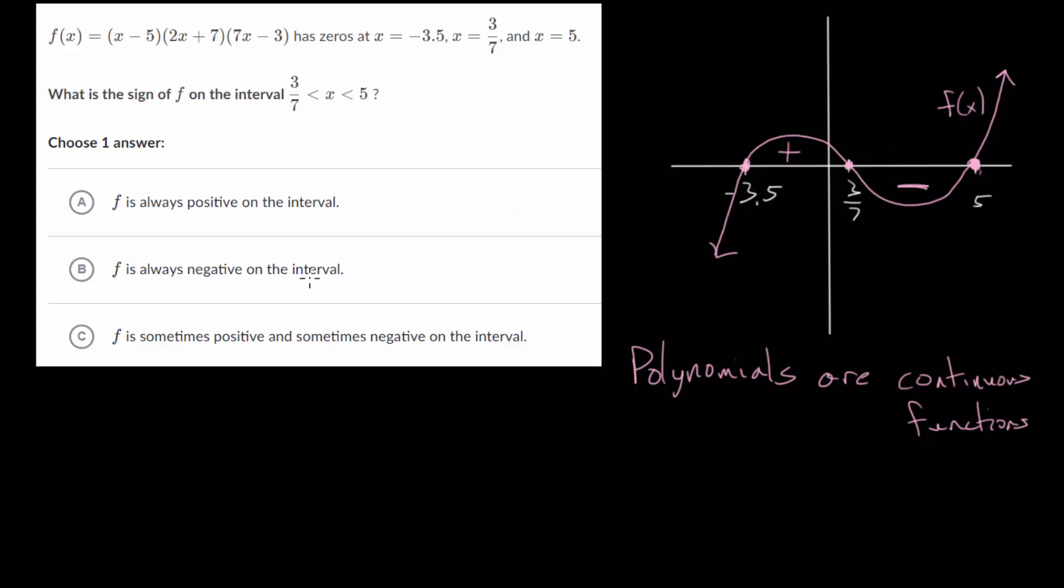The way to understand that is to imagine what would happen if it wasn't always positive or negative. The only way for that to work is if there was some type of break in the function. So if the function came up and then maybe had a break and then started again down here.